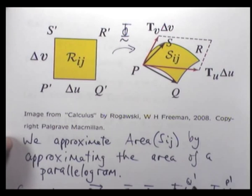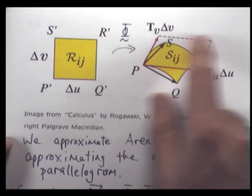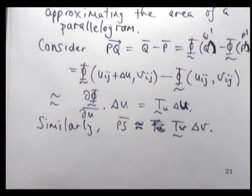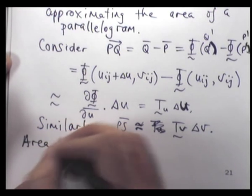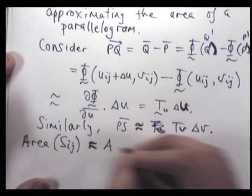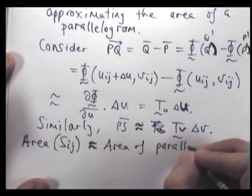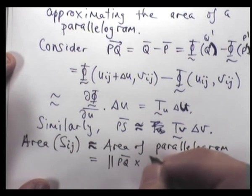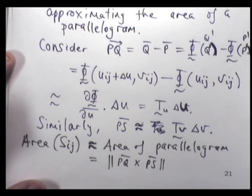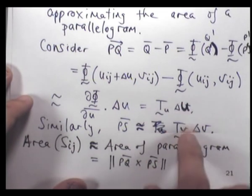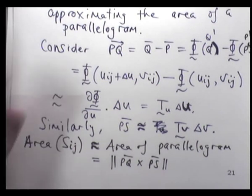We're going to approximate the area of this curved parallelogram by computing the area of this parallelogram — that's where we use the cross-product. The area is approximately equal to the magnitude of this cross-product, and now we're going to replace vector PQ and vector PS with our approximations.